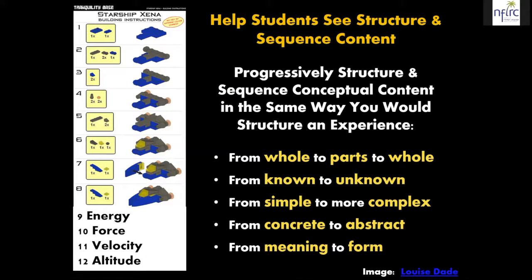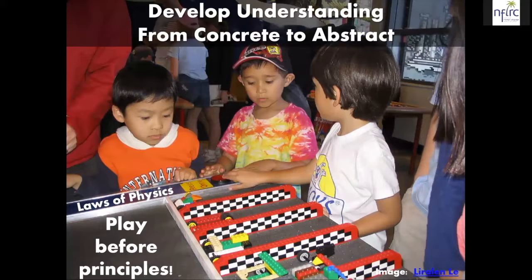So we need to give students an opportunity to see what the end project or product is going to look like, break that down into small parts, and then help them see how those parts fit back into the whole. We need to move from what they already know to what they don't know, start simple and move to more complex tasks, start with the concrete and move toward the abstract — both in terms of language and content — and focus on meaning so that they understand what's going on before we start having them think about form.